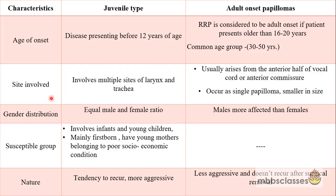Now let's see the difference between the two subtypes. The juvenile type presents before 12 years of age. The adult onset RRP presents in patients older than 16 to 20 years of age, and the most common age group affected in the adult group is 30 to 50 years. The juvenile type is the aggressive form — it involves multiple sites of the larynx and the trachea. The adult type usually occurs as a single papilloma, smaller in size, and the most common site is the anterior half of the vocal cord or the anterior commissure. Regarding gender distribution, the juvenile type shows equal male and female predilection, but in the adult type males are affected more than females.